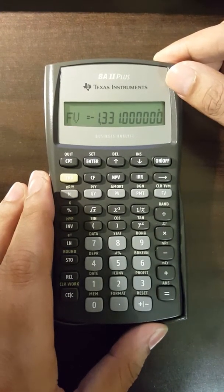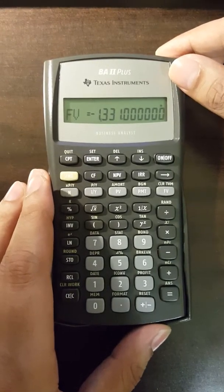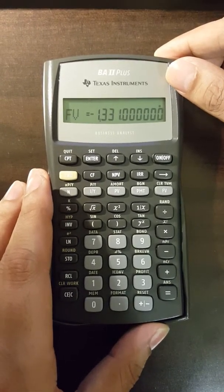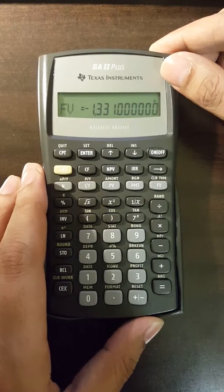As we discussed in the last example, we have to be careful about the sign. This is a cash outflow. This is the money that we're investing. So this will be negative.